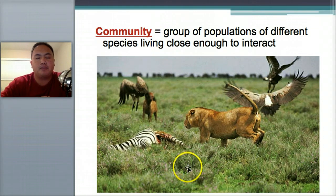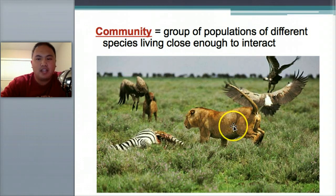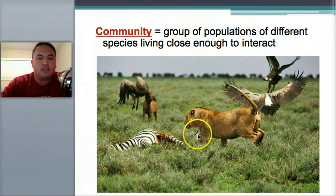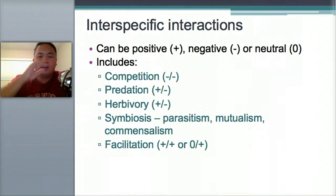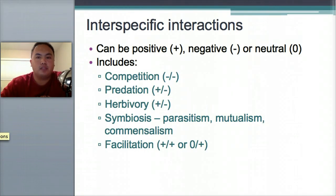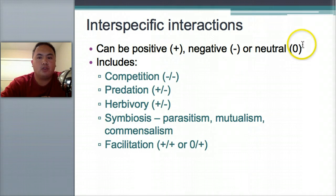Here's an example — a picture of a community. You see a zebra, a lion, different species all in the same area that interact. When you have a community, there are different types of interactions between species. They can be either positive, negative, or neutral — plus, minus, or zero.